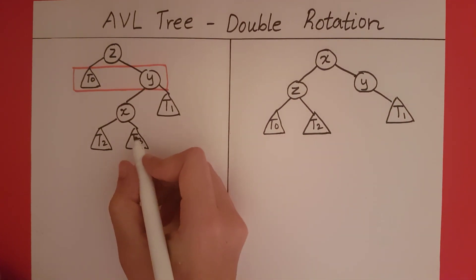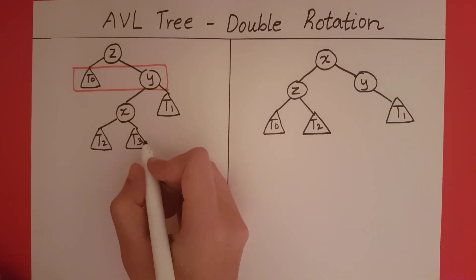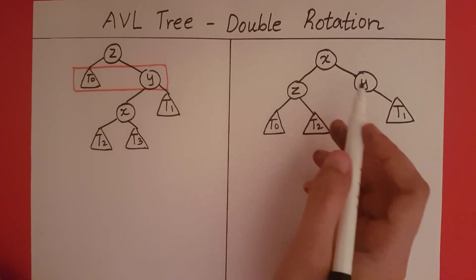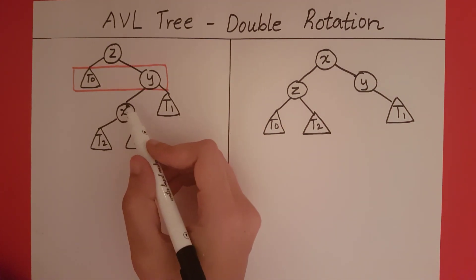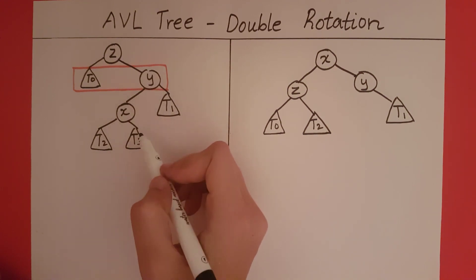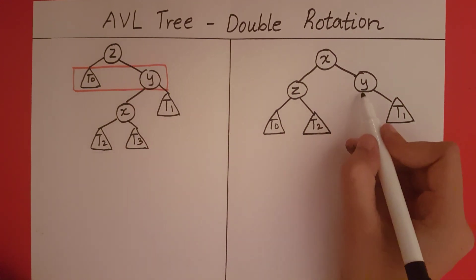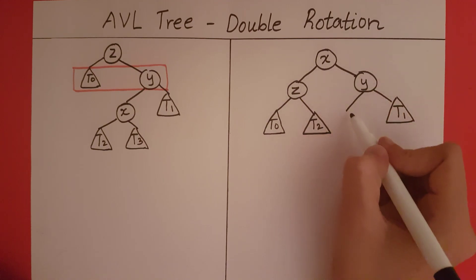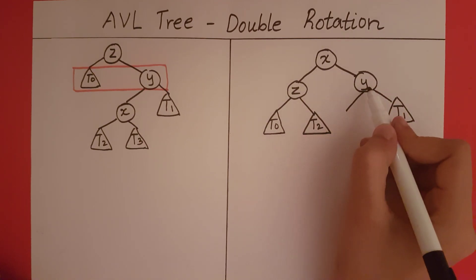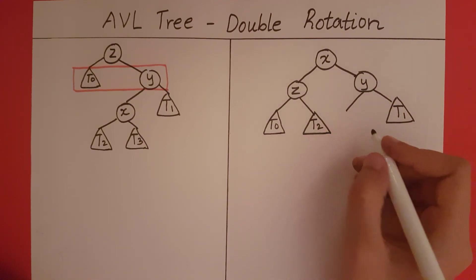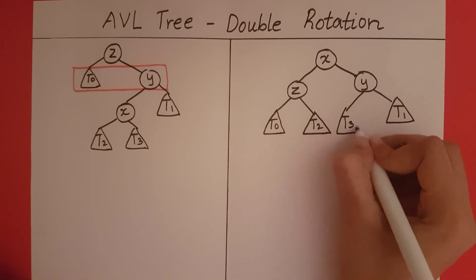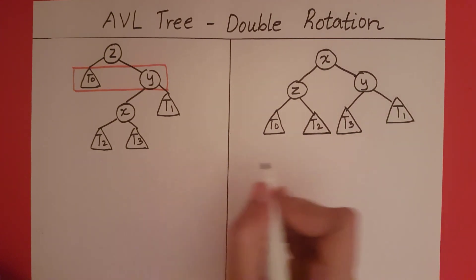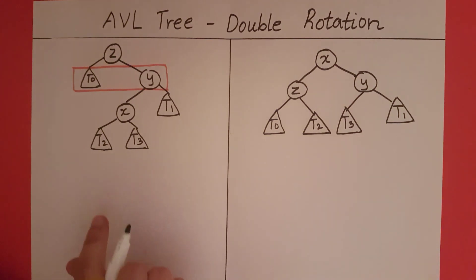Let's look at T3. T3 is to the right of X, but the right of X is full. So where should we put T3? Somewhere between X and Y — that's where T3 comes. So the space between X and Y is going to be the left child of Y. This is how you perform the rotation if you have this kind of imbalance.